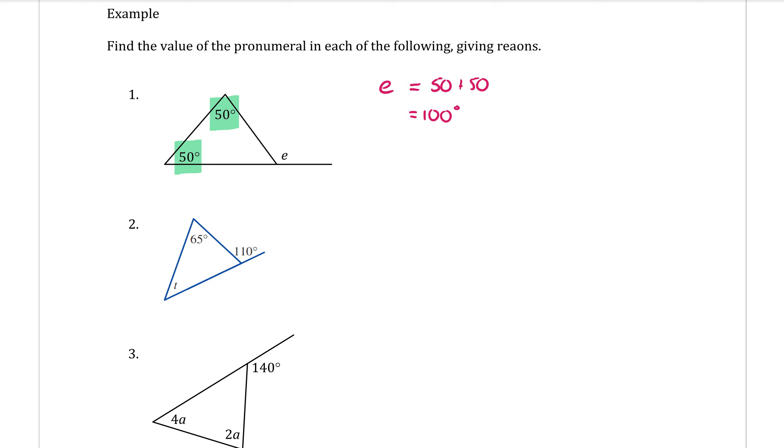Now the reasons - we always have to give reasons in geometry. The reason for this one is one of the longest ones that you'll have to write down. So this is what you need to write: The exterior angle is equal to the sum of the opposite interior angles.